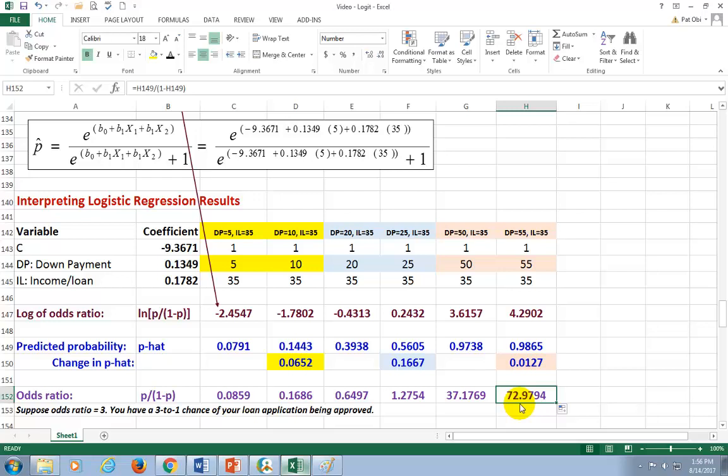So, notice that the estimated probability for a down payment of 50% and 55% is about the same. Almost 1. As a result, changing odds is negligible. Just as in the case when down payment increased from 5% to 10%. As you can see, changing odds close to zero. And also as you can see, it doesn't really matter that the odds ratio for down payment of 55 is 73-to-1 compared to what it was at 50, 37-to-1. It really doesn't matter, the reason being that the likelihood of success is virtually assured.